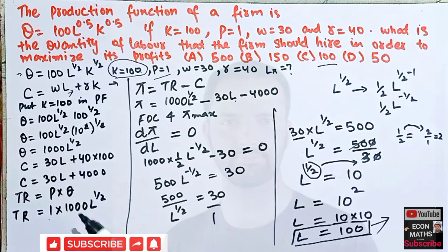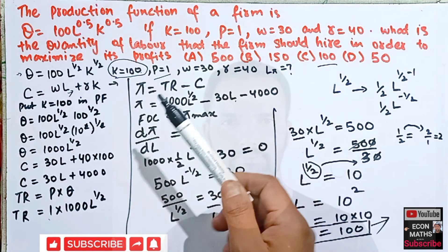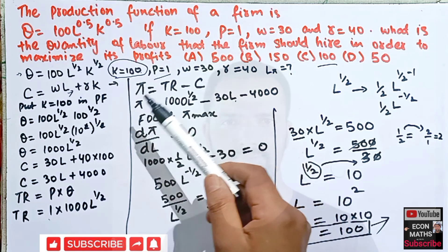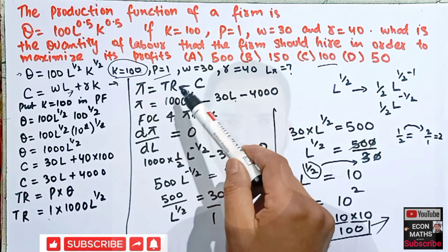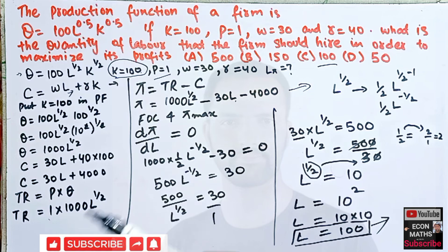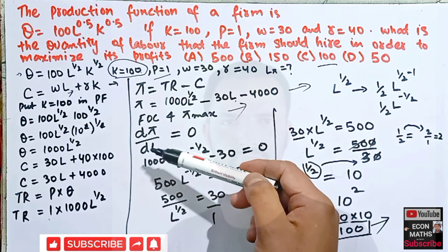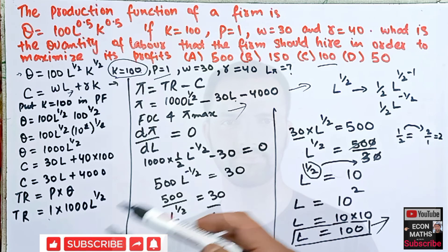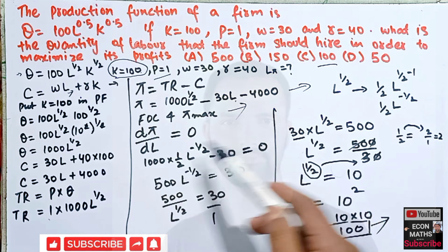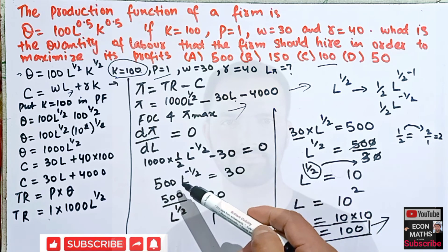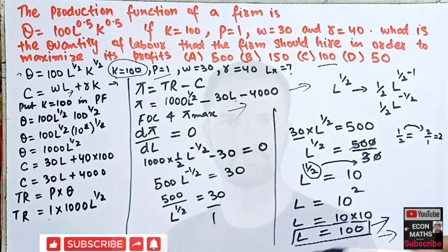Profit equals total revenue minus total cost. Using TR and TC, we formed the profit function. The first-order condition requires dπ/dL = 0. Taking the derivative and solving gave us the optimum level of L = 100. I hope this was clear. If you like these videos, please share and subscribe to the channel. Thank you.